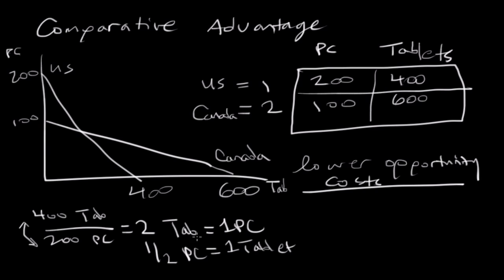Now let's look at the situation in which Canada were to produce PCs. If we were to produce a PC, we have 600 tablets over 100 PCs. Therefore, we can create six tablets with the amount of effort that we would have used to create one PC. As we know, this would be one sixth PC equals one tablet.